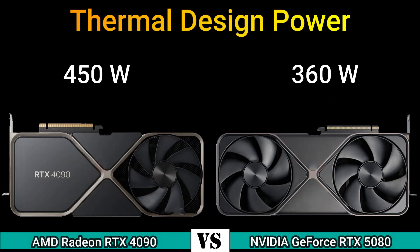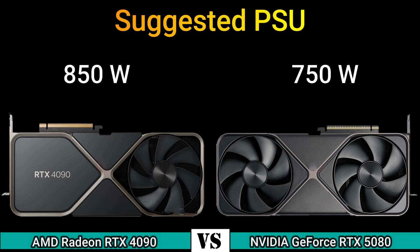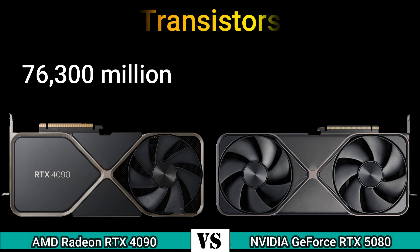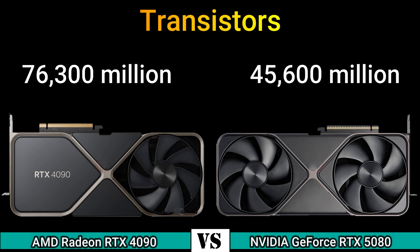Thermal design power 450 Watt and 360 Watt. Suggested PSU 850 Watt and 750 Watt. Process size 5 nanometer. Transistor count 76,300 million and 45,600 million.